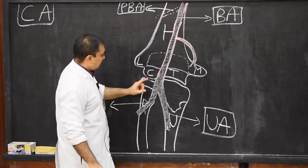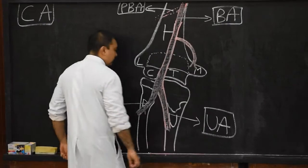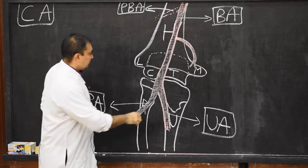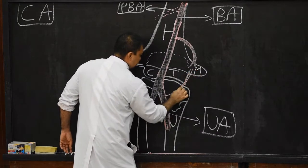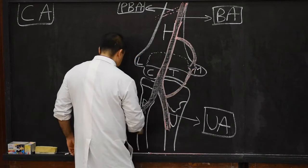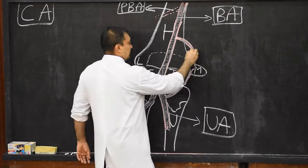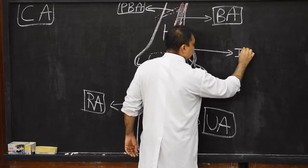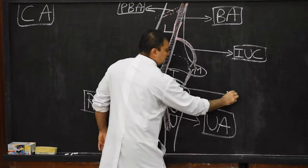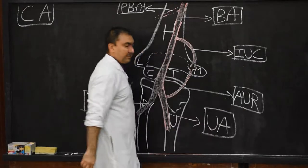From below, there will be a branch of the ulnar artery. We highlight this ulnar artery. This branch of the ulnar artery, which comes from below, is the anterior ulnar recurrent artery. So these are the two main branches in anastomosis in front of the medial epicondyle: inferior ulnar collateral artery (branch of brachial artery) from above, and anterior ulnar recurrent artery (branch of ulnar artery) from below.